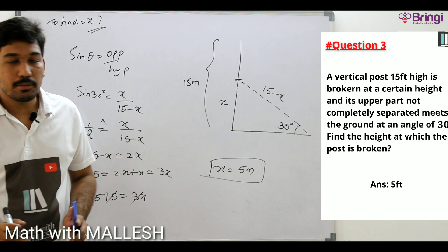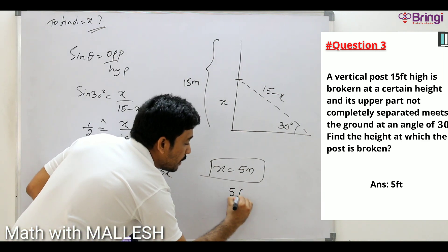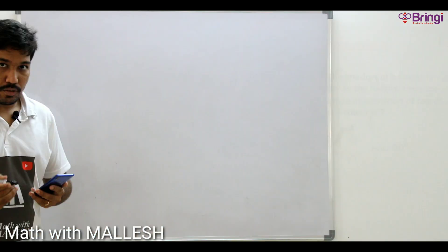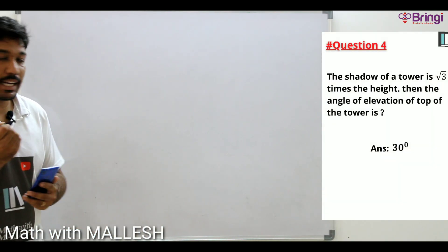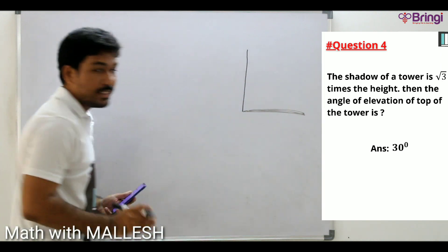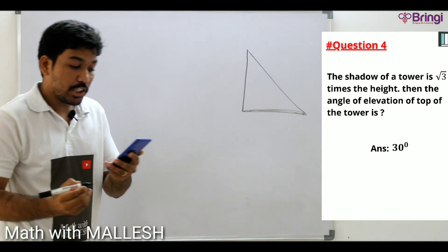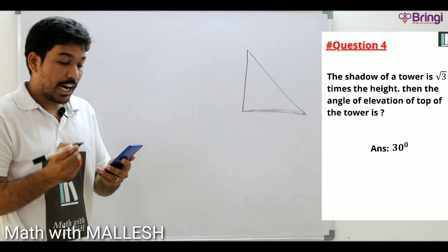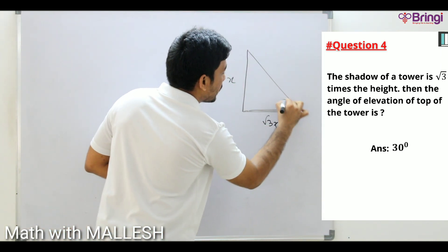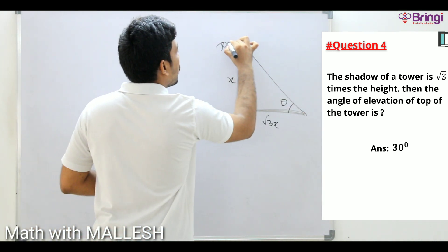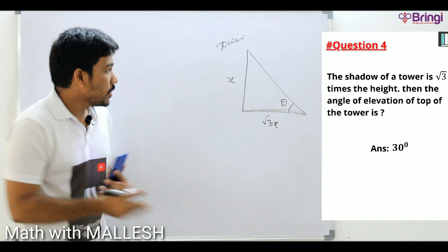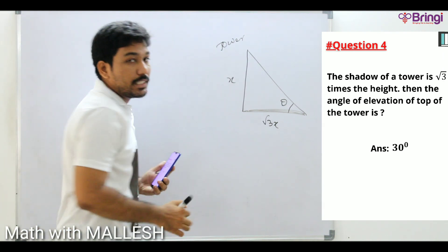So the post is broken at exactly 5 feet height. They gave the value in feet, so the answer is 5 feet. Moving on to question four: the shadow of a tower is √3 times the height of the tower. This is the tower, and this is the shadow. Assuming height as x, the shadow is √3 times x.